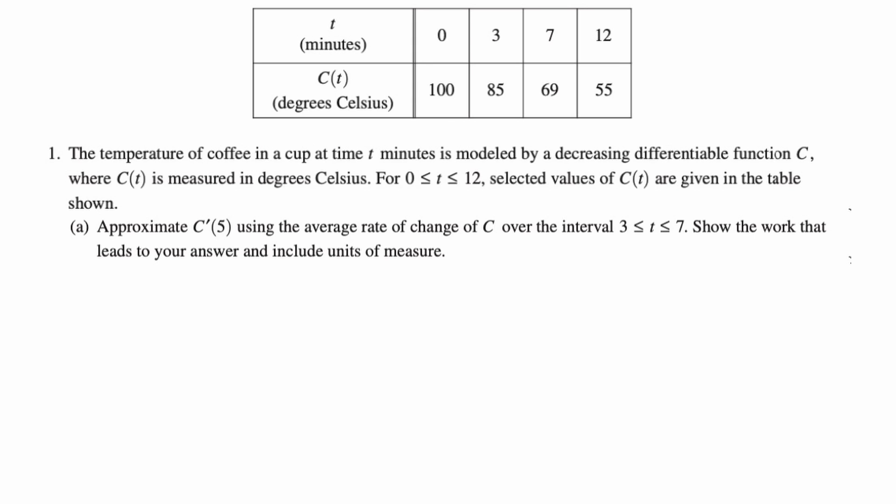Part A: Approximate C'(5) using the average rate of change of C over the interval from 3 to 7. It's interesting that they're giving you those bounds now. They didn't used to do that. They would just say approximate C'(5). Show the work that leads to your answer. Include units of measure.